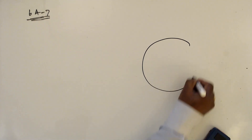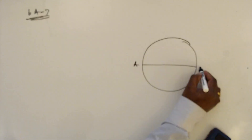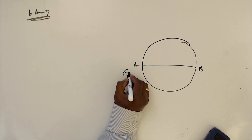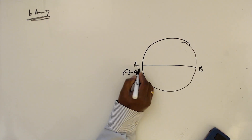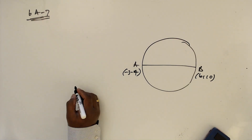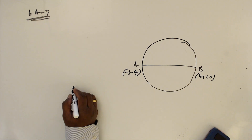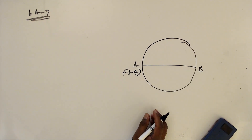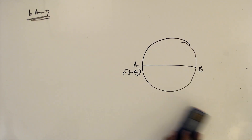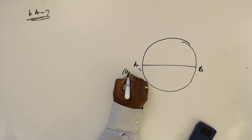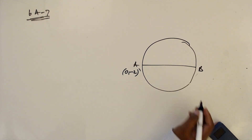Question number 7. AB is a diameter. A is (0, -2) and B is (6, -5).